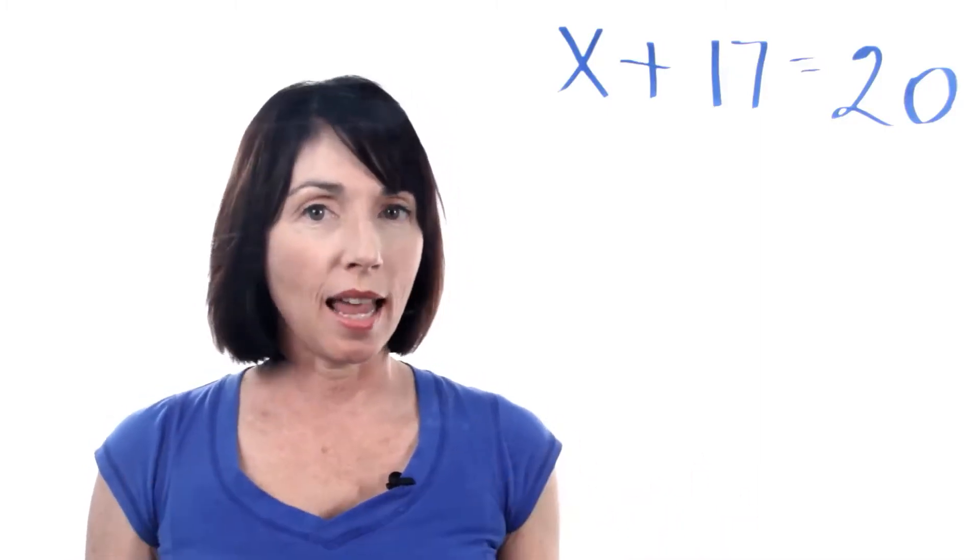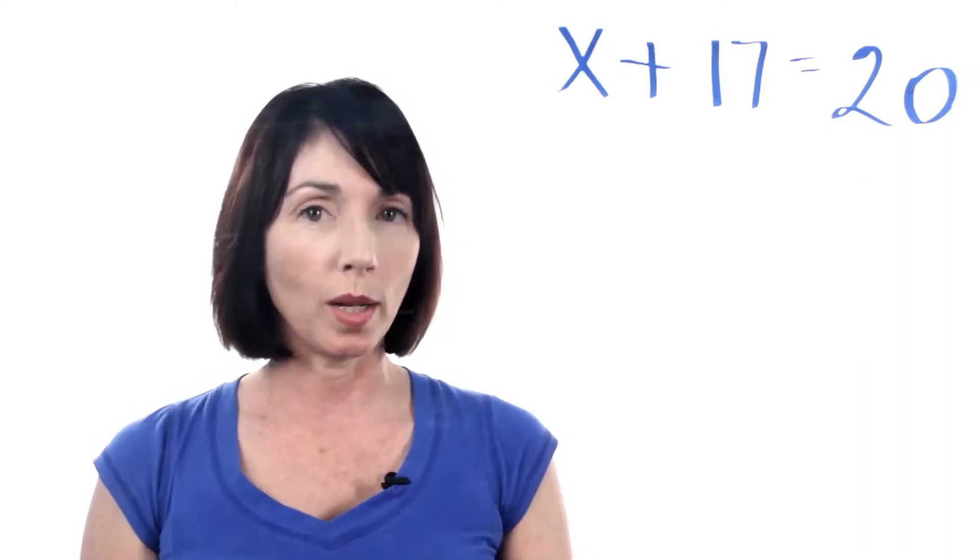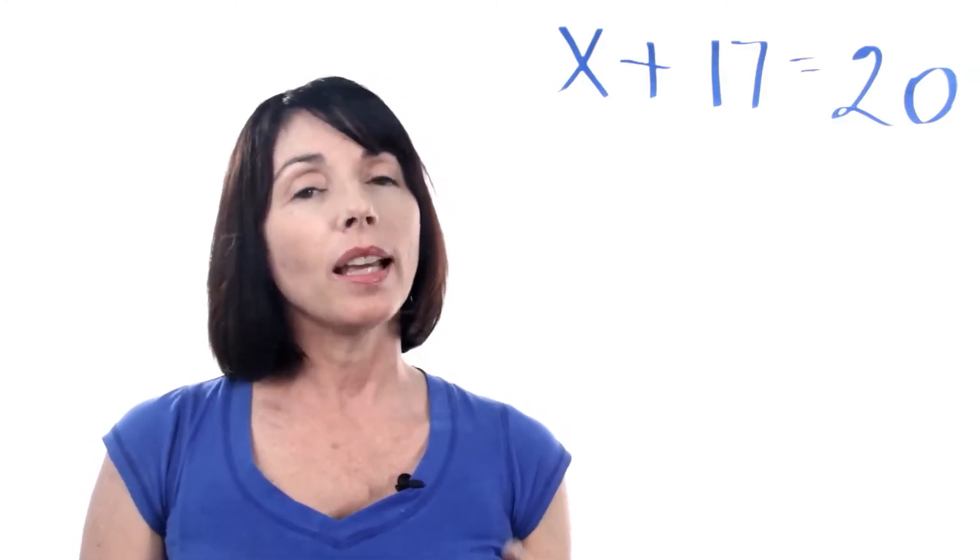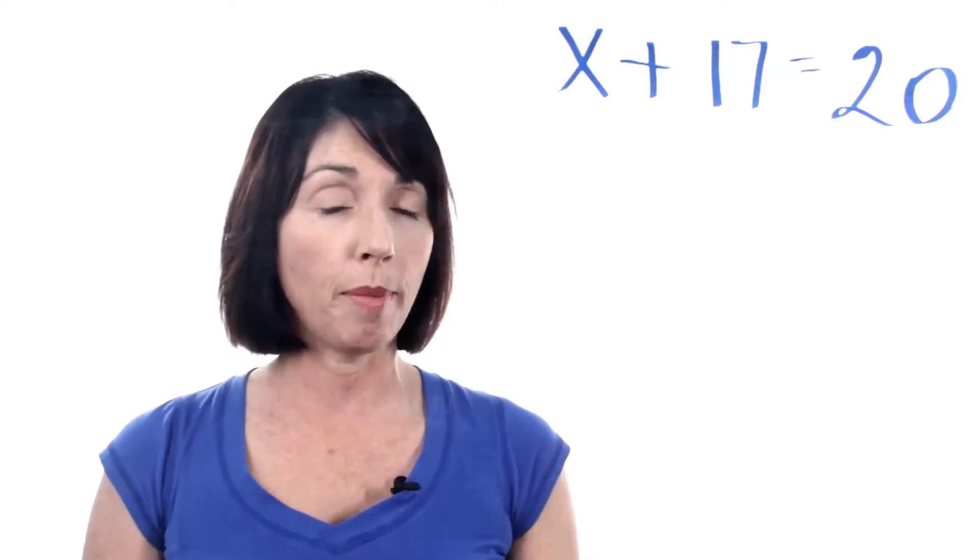The objective is always the same with this kind of equation. You want to get the variable by itself on one side of the equation. Now an equation is like a scale that's in balance and it's your job to keep it in balance.